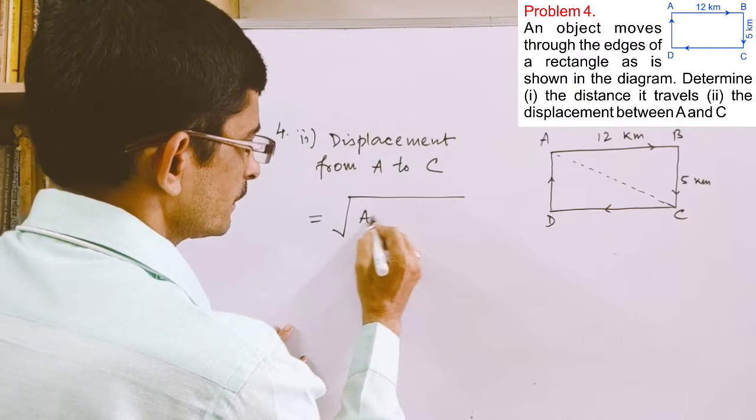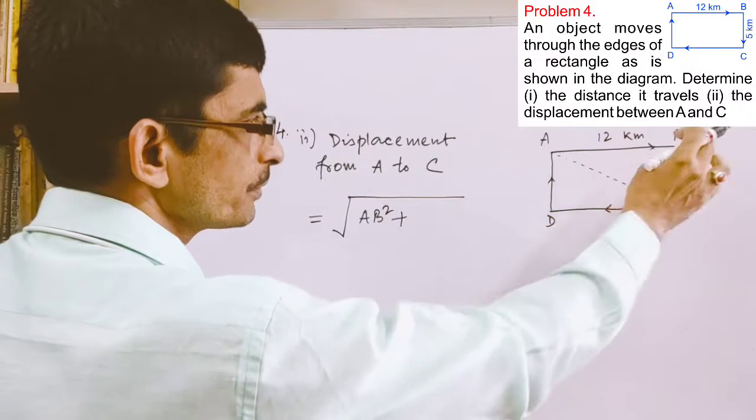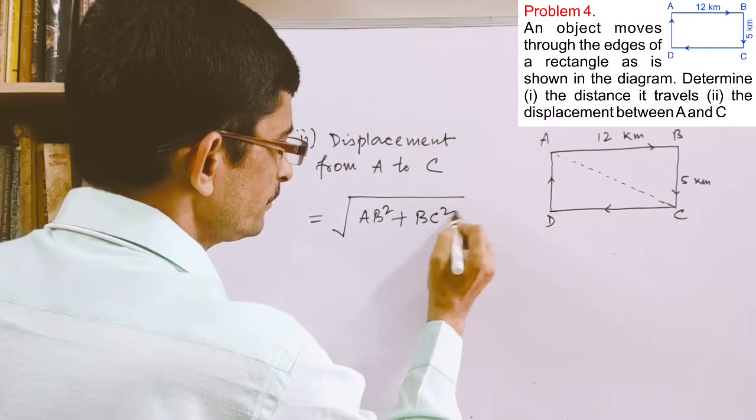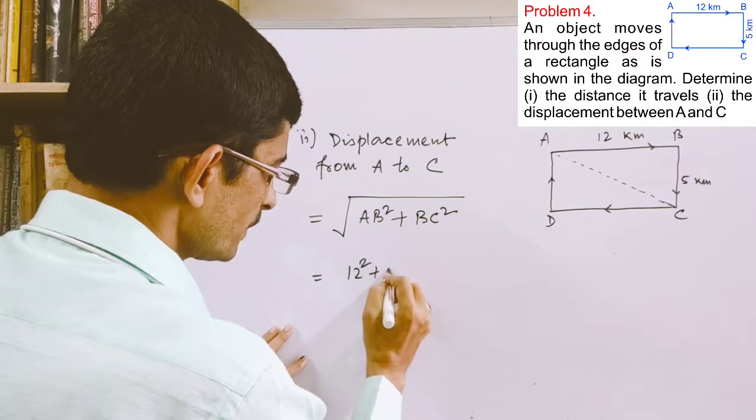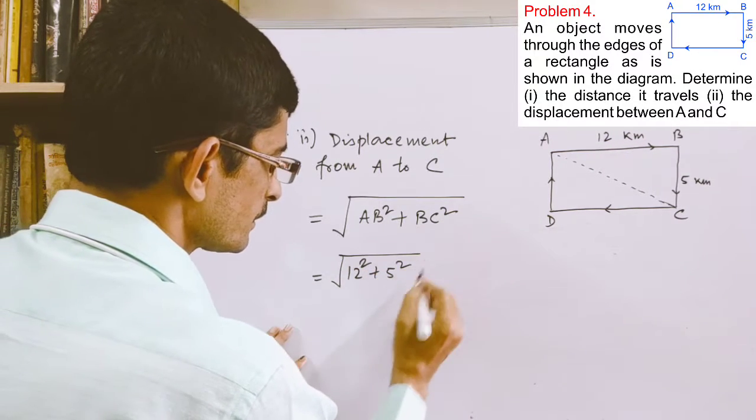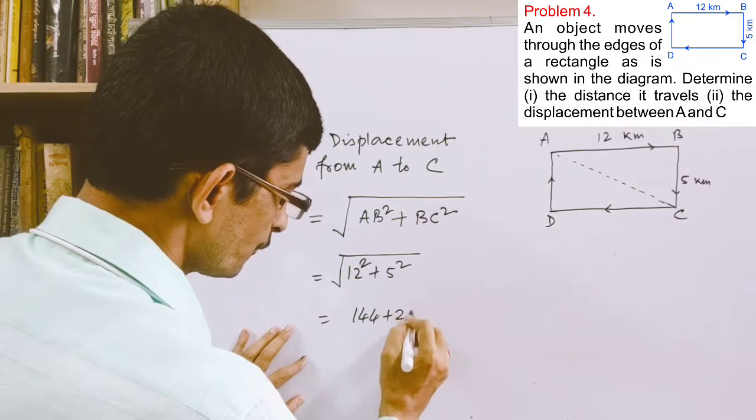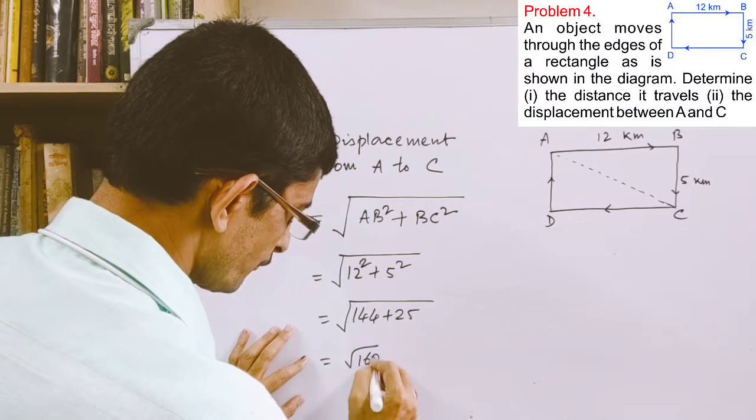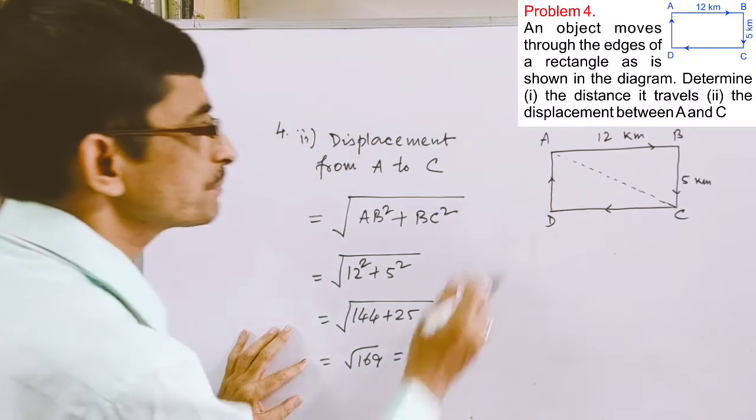AB square, the square of the distance of AB and the square of the distance of BC. Now put the value of AB, that is 12 square plus 5 square. If you square them, 144 plus 25, that is root under 169, which is 13 kilometers. So the displacement between A and C is 13 kilometers.